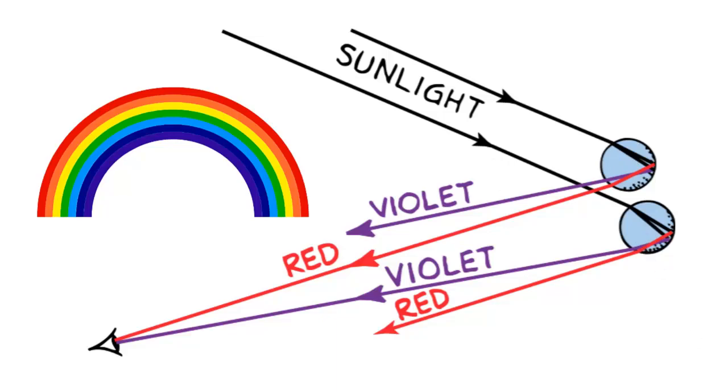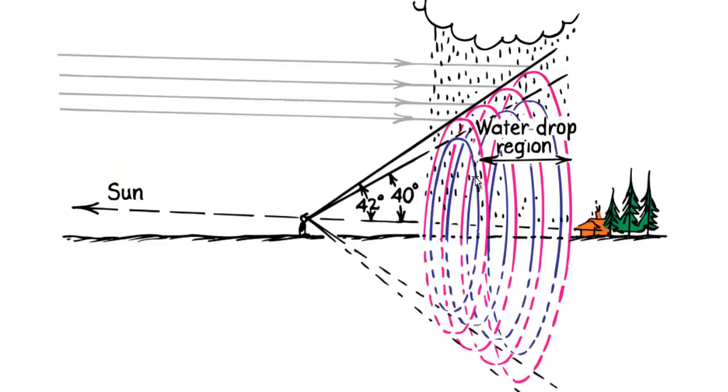All the water drops that are dispersing red into your eye form a cone, and all the ones dispersing violet form a smaller cone. If you look out, that's what gives you this big arc of a rainbow. It's a full cone - you just don't see all of it because you're not in an elevation to see it. You would see it if you're higher up, as in this view from an airplane.